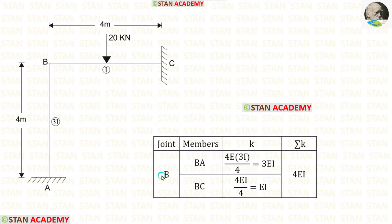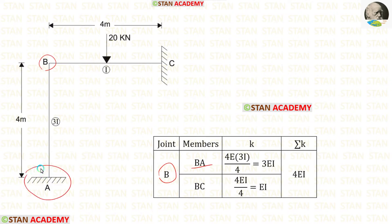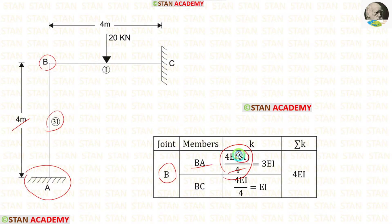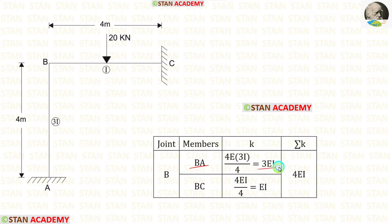Now let us find the stiffness at joint B. First, let us find the stiffness for member BA. From joint B, we look at point A, which has a fixed support. Since the far end is fixed, the formula for stiffness is 4EI/L. The length of BA is 4 meters and the moment of inertia is 3I, so applying the formula gives a stiffness of 3EI for member BA.